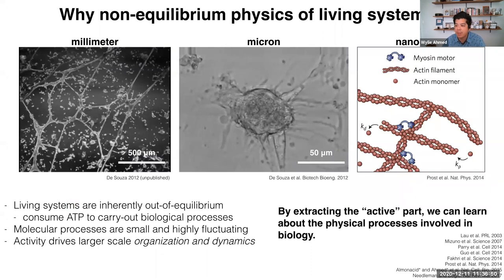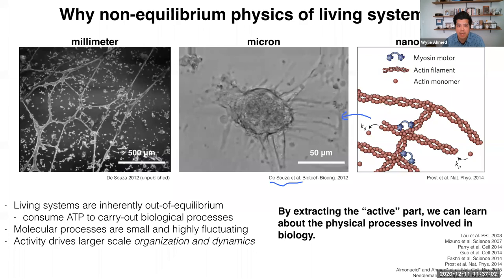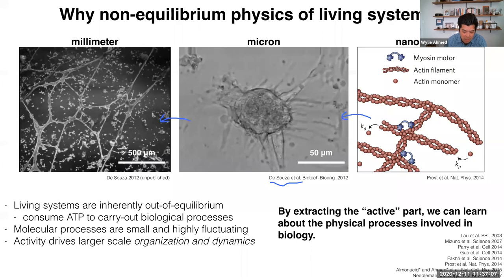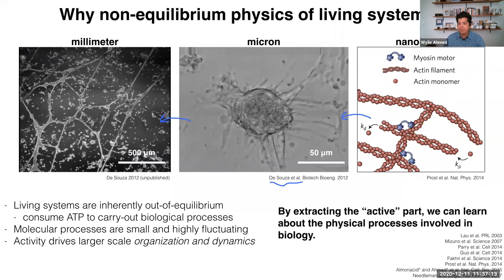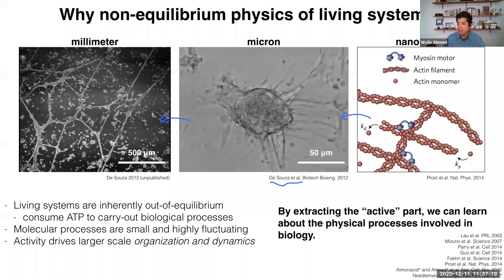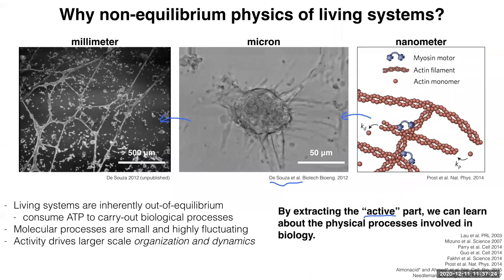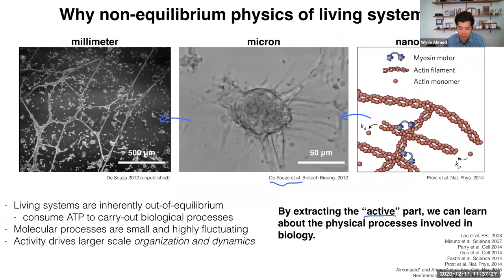At this nanometer scale we have molecular motors. In this example, this is actin. There are all kinds of things inside the cell that consume ATP or other fuel sources to drive the system out of equilibrium. This activity at this scale drives cellular activity — this is a whole contracting cardiac cell, which is beating. If you leave that for long enough, you start to get larger scale organizations at the millimeter scale. If you don't have this activity and get rid of it, you lose all of this interesting stuff. What we're trying to do is extract what this activity is to understand both the physics and the biology of these systems.